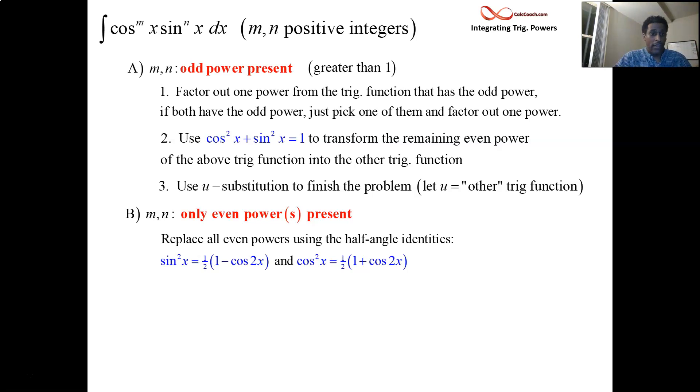So then the only thing left then is if one of them has a power of one, or maybe both of them has a power of one, and that's the easiest of all cases. I probably should have started with that one. With that one, you just do a u sub. You let u be the one that isn't, the one that's raised to the power of one, and then it all works out nicely and there's no complications to it at all.